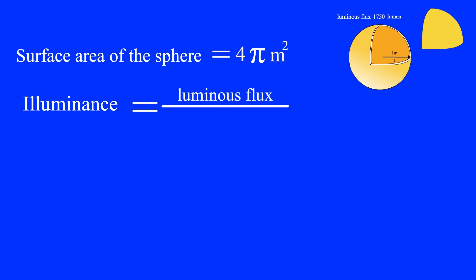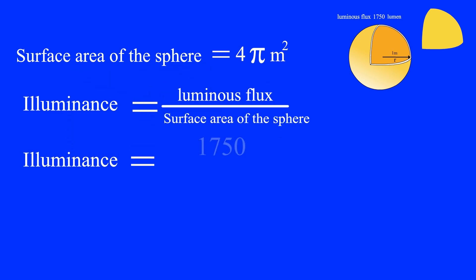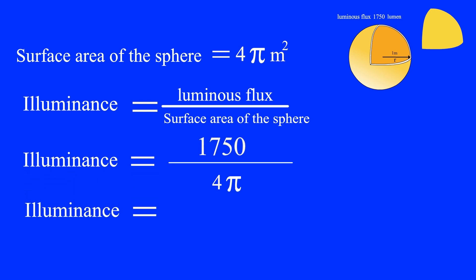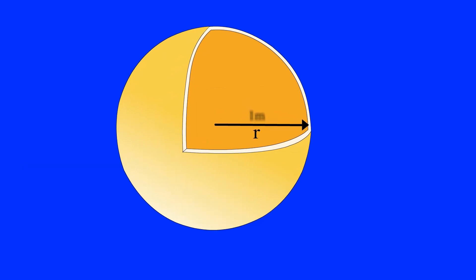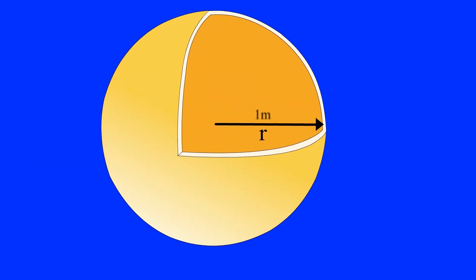The amount of illuminance can be calculated by dividing the amount of luminous flux by the surface area of the sphere. Substituting the values: 1750 divided by 4π equals 139 lux. This means that at a distance of one meter from the light source, 139 lumens fall from the lamp per square meter. Therefore, the illuminance of the inner surface of the sphere is equal to 139 lux.